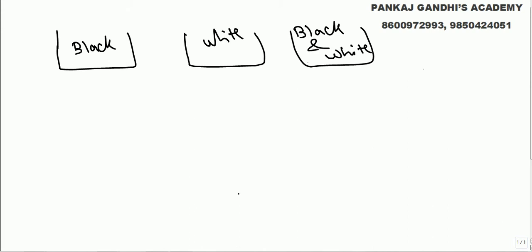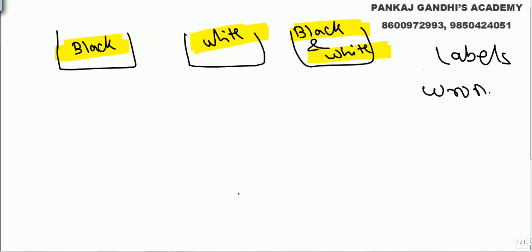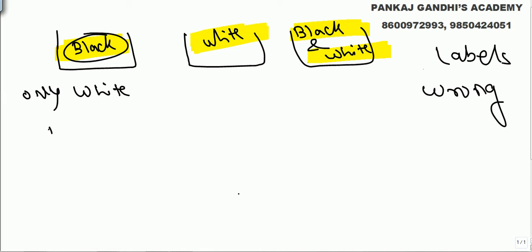The question given here is: there are three boxes — one contains only black colored balls, one contains only white colored balls, and the third contains some black balls and some white balls. But the question says all three labels are wrong. If the label says 'black,' it contains anything except black — it may have only white balls or some black and some white balls.